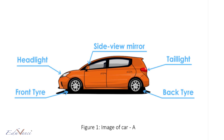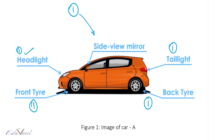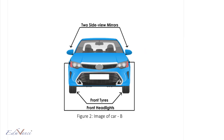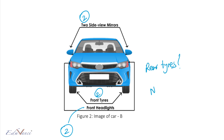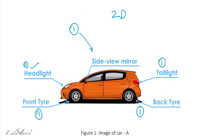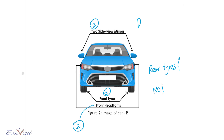If you look at the image of this car, what can you see? You can see one headlight, one front tire, one back tire, one tail light, and one side view mirror. Now if we look at the car from another view, we see two side view mirrors, two front tires, and two front headlights. But can you see the rear tires? We cannot.